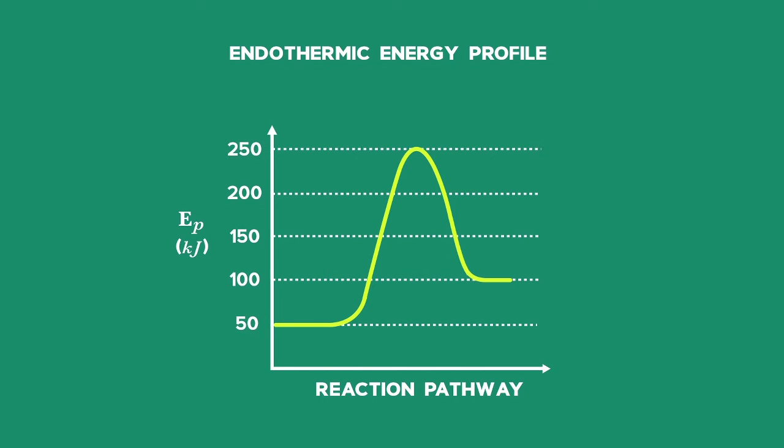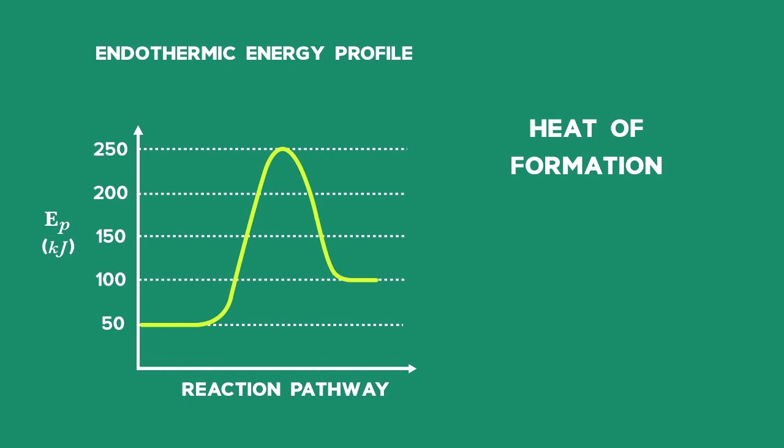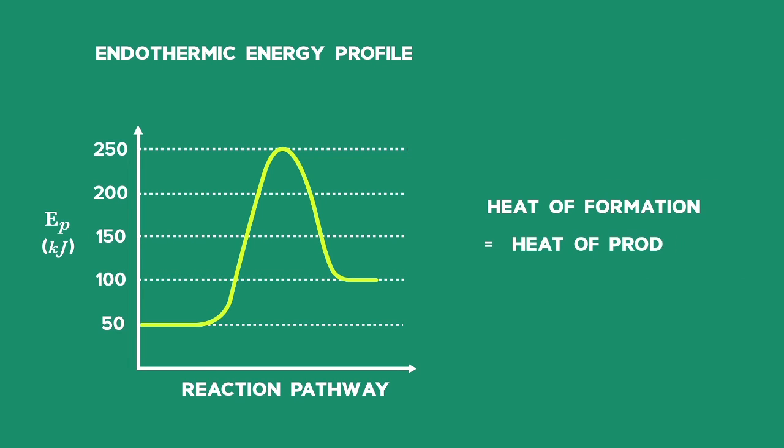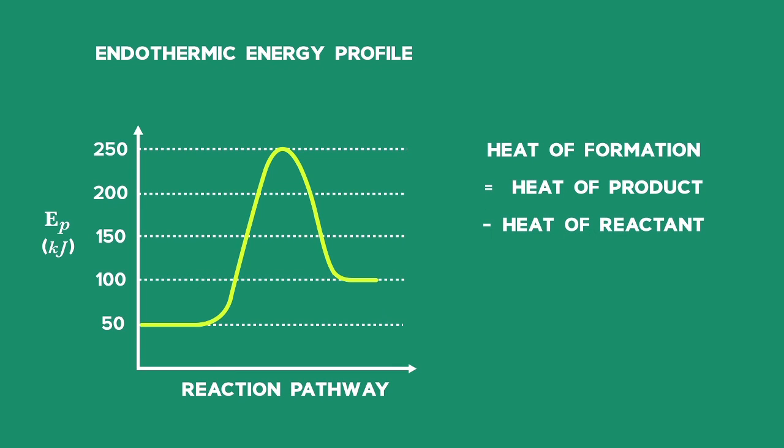Three, we can calculate the heat of formation, also known as the enthalpy of reaction. We do that by saying that the heat of formation is equal to the heat of product minus the heat of the reactant, which is equal to 100 minus 50, which equals 50 kJ. This is a positive answer confirming that this is an endothermic reaction.